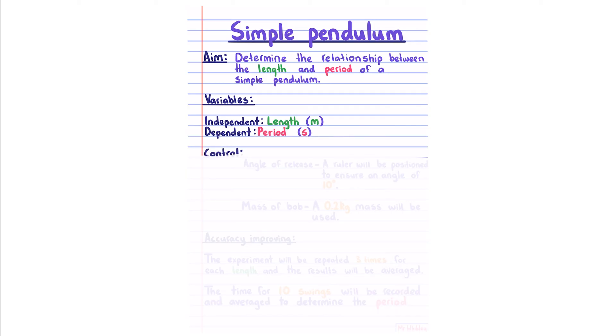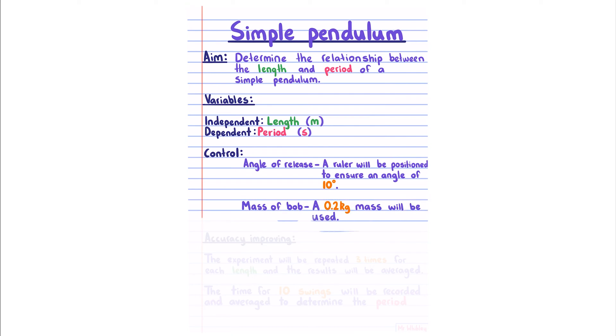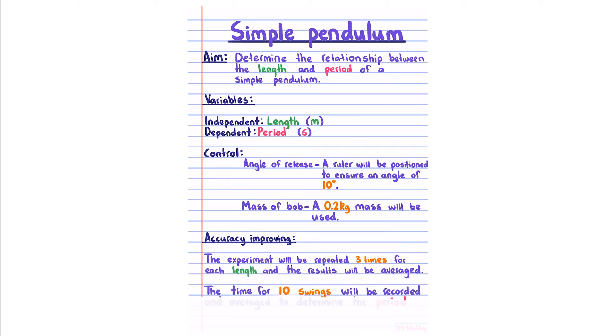For my control variables, I'm going to control the angle of release. To do this, a ruler will be positioned to ensure an angle of 10 degrees. I'll also control the mass of the bob. For this, a mass of 0.2 kilograms will be used. For my accuracy improving techniques, the experiment will be repeated three times for each length, and the results will be averaged, and the time for 10 swings will be recorded, and averaged to determine the period.